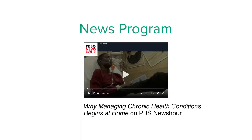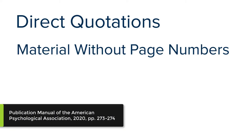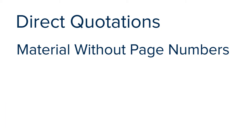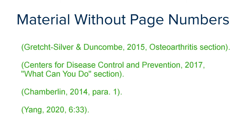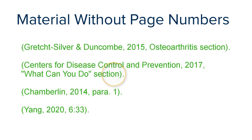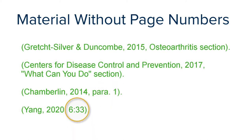Let's use the news program entitled 'Why Managing Chronic Health Conditions Begins at Home.' Since this is a video, direct quotations will be based on material without page numbers. You can use a section header in the absence of pages. An abbreviated heading or section gets quotation marks. You can number paragraphs by typing 'para.' and its number. In audiovisual material like a video, use a timestamp for the beginning of the quotation in place of the page number.